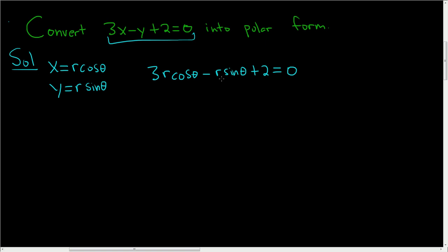To finish, we have to solve this for r. We'll subtract 2 from both sides and factor out the r from these terms. So this is r times 3 cosine theta minus sine theta, and that equals negative 2.